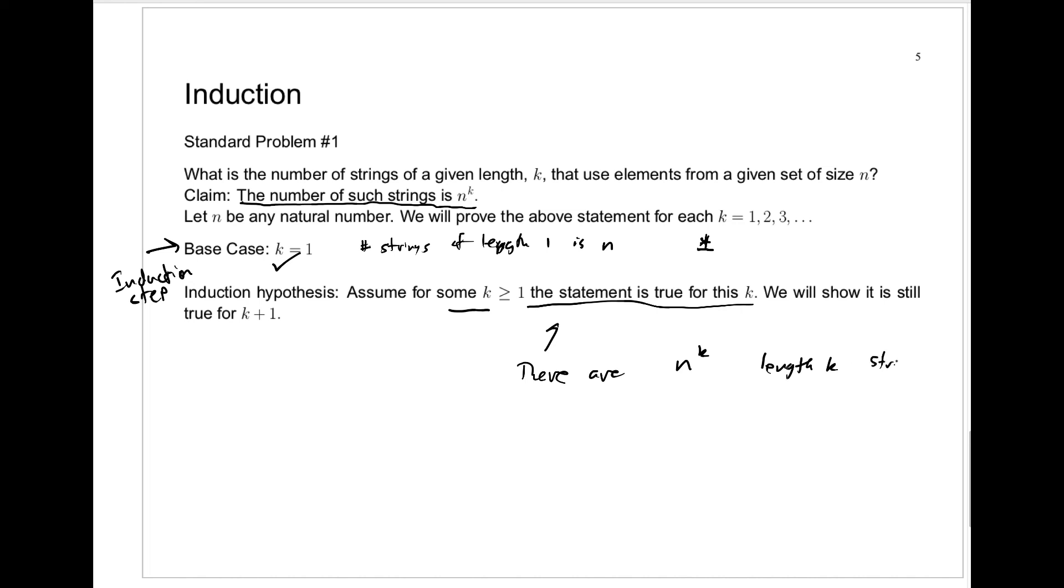when I say assume the statement is true for this k, that means there are n to the k length k strings. I won't write this part, but there are n to the k length k strings, again, from this particular alphabet of size n.